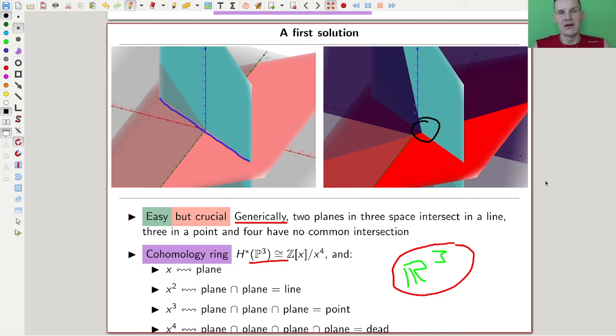And the mathematical foundation used for Schubert calculus was supposed to say, the cohomology ring, whatever that is, of the projective space in this case, is just the polynomial ring mod x^4, in this example, where x corresponds to the plane, x squared, so cohomology ring is about intersections, x squared corresponds to a line, namely the intersection, the generic intersection of two planes, x cubed is the triple intersection, is a point, and x to the four is dead.